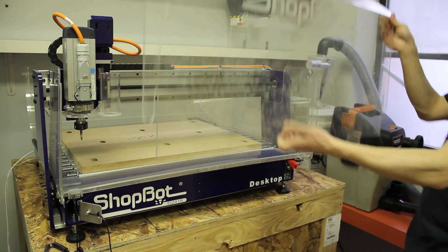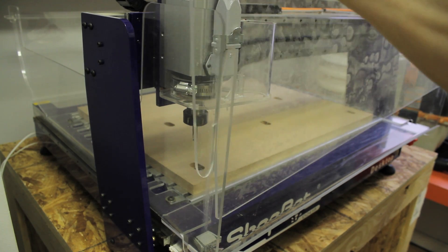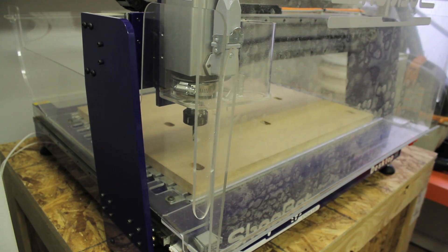For the front of the enclosure, you've got this vertical piece, which slots into the sides. This is the piece that you'll be removing and putting back on most often so that you can do bit changes and place material onto the bed.